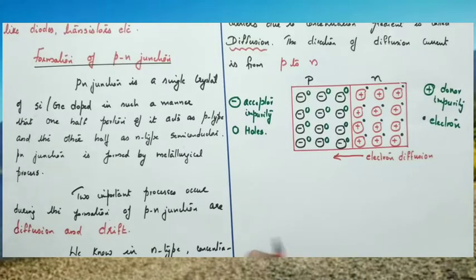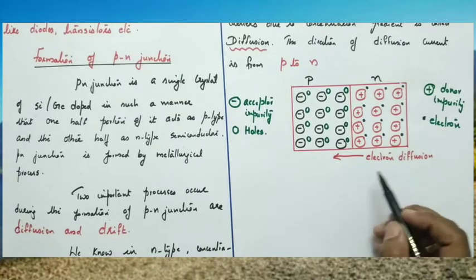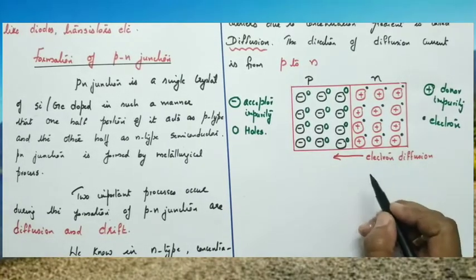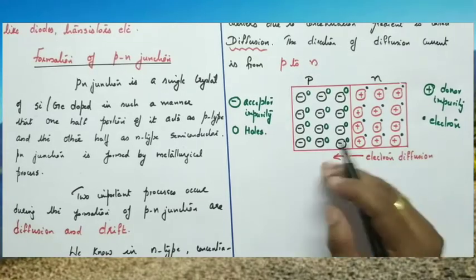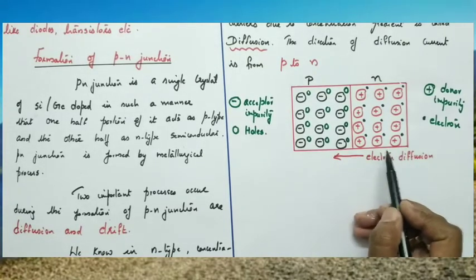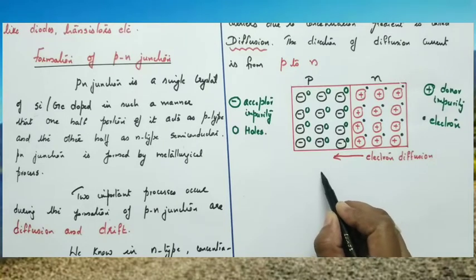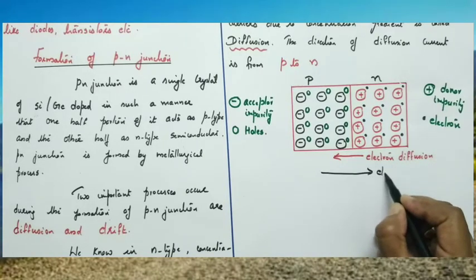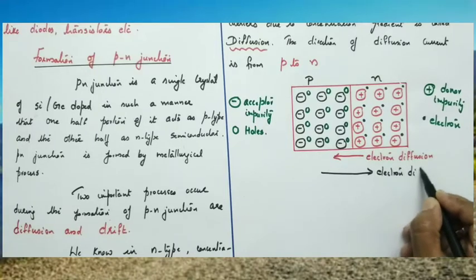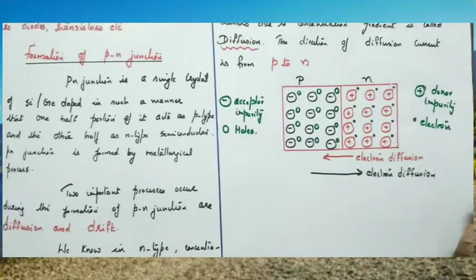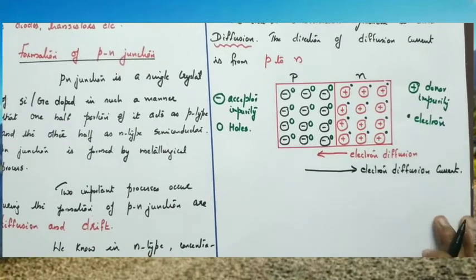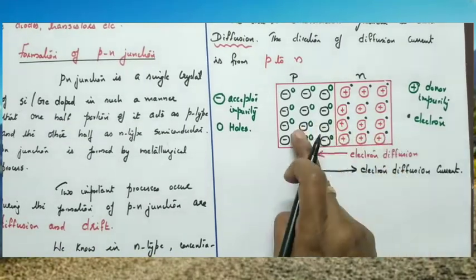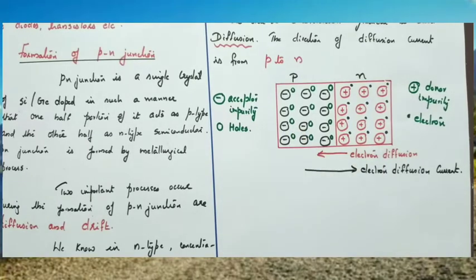If electrons diffuse from N to P, what is the direction of electron diffusion current? The direction of current is opposite to that of electron flow. So, electrons move from N to P, but the direction of electron diffusion current is from P to N.